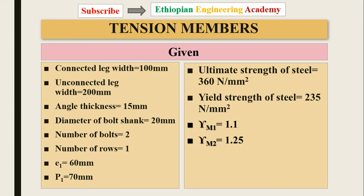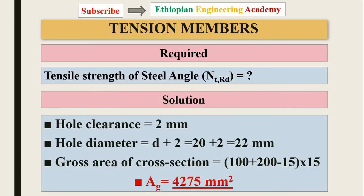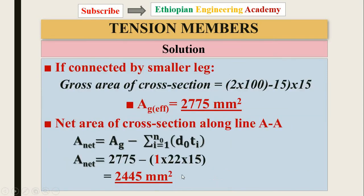The given data: connected leg = 100 mm, unconnected leg = 200 mm, angle thickness, bolt diameter, number of bolts, number of rows, p1, ultimate strength, yield strength, and partial safety factors. The required result is the tensile strength of the unequal angle section. The hole clearance is 2 millimeters; the hole diameter is taken from the table per EN 1993 as 22 millimeters. The gross area of the cross section is calculated by deducting the plate thickness from the perimeter dimensions and multiplying by thickness.